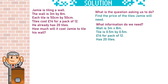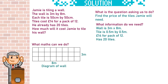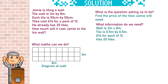What maths can we do to answer the question? I'm going to draw a diagram of the wall with the squares drawn in — that just helps me visualise what we're dealing with. We've got 3 metres down and 8 metres across. Since each tile is half a metre, instead of 8 across it's going to be 16 across, and instead of 3 up it's going to be 6 up.